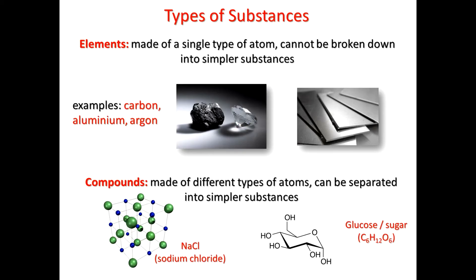If you connect a load of carbons, oxygens, and hydrogens together in a ring-type structure, you can form a ring called glucose, and this is a sugar. Just by combining carbons, hydrogens, and oxygens, you can actually form sugar, which is a very, very important molecule. There are many more examples of these in the literature — found in the ground, synthesised in laboratories, and found in the air.